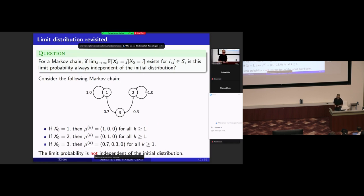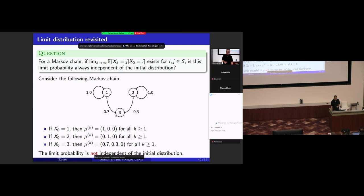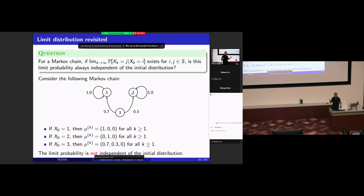Let's check another example. This Markov chain has three states. From states one and two, you always go back to the same state with probability one. From state three, with probability 0.7 you go to one, and with probability 0.3 you go to two. If you start from one or two, you stay there. If you start from three, after one step you go to either one or two and then stay there.